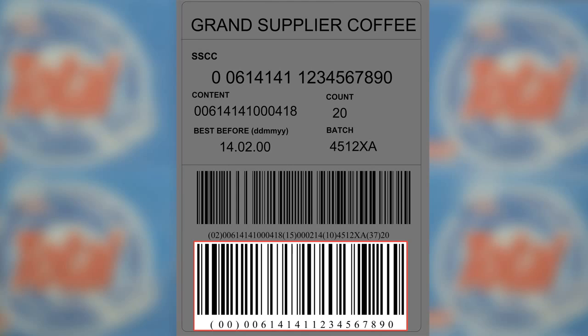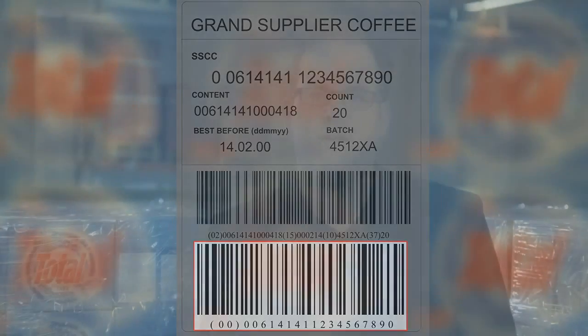The SSCC is always the lowest barcode symbol on the GS1 logistic label. There are currently more than 150 application identifiers, and your local GS1 member organization will be happy to help you choose the right AIs for your needs.